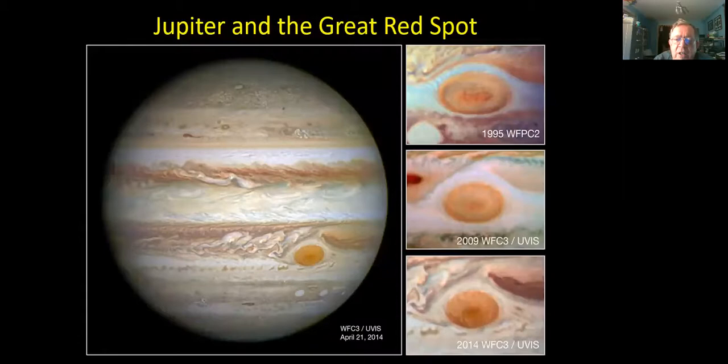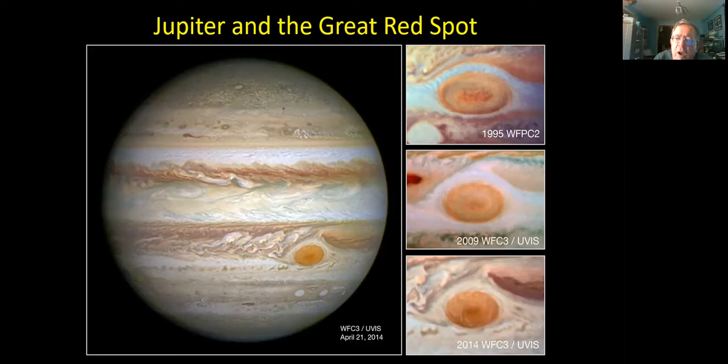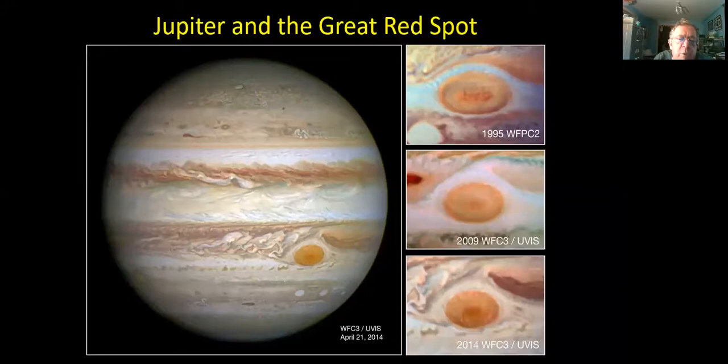Looking at the Great Red Spot is a fantastic Hubble picture of Jupiter and the changes over time from 1995 to 2014. Three different snapshots of the Great Red Spot all taken with the Wide Field Planetary Camera. The incredible detail on the atmosphere of Jupiter with its swirling clouds is just amazing.